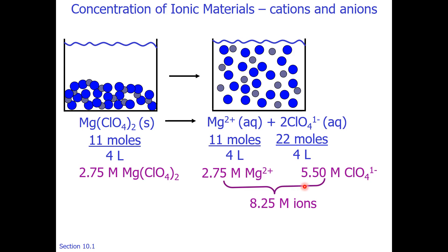If I add these two together, I have 8.25 molar ions, meaning I'm counting both the cation and the anion amounts. So a chemist may say, I have a 2.75 molar solution of magnesium perchlorate. What they really mean is, it broke apart, there's cations, there's anions, they have their stoichiometric ratio of concentration.